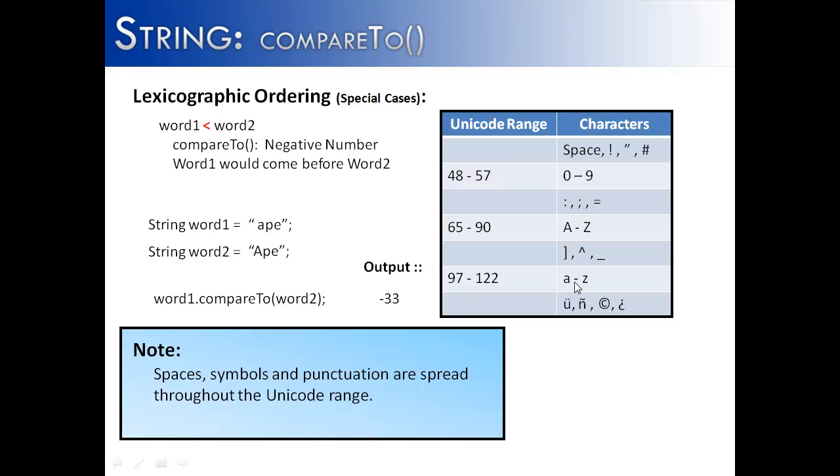Symbols are spread throughout the Unicode ranges. Most of the special characters are after the lowercase letters. But there are some that are interspersed between numbers, capital letters, and lowercase letters. If you can remember the range of numbers, capital letters, and lowercase letters, you'll be doing pretty well. And then you can look at an ASCII chart or a Unicode chart to see where all of the special characters line up.